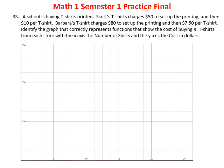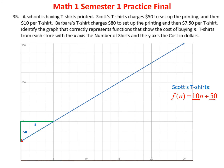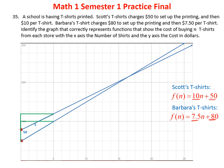Problem thirty-five: Scott charges $50 setup plus $10 per t-shirt, giving a y-intercept of 50 and slope of 10. Barbara charges $80 setup but only $7.50 per t-shirt, so she starts higher at $80 but her slope is less steep. The two lines represent these different pricing structures.